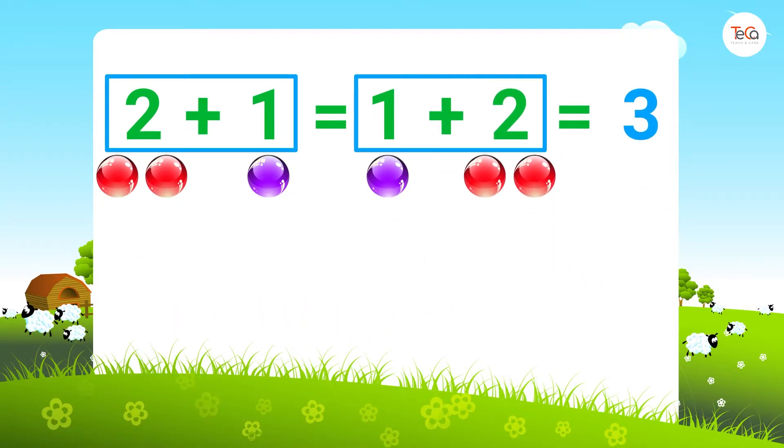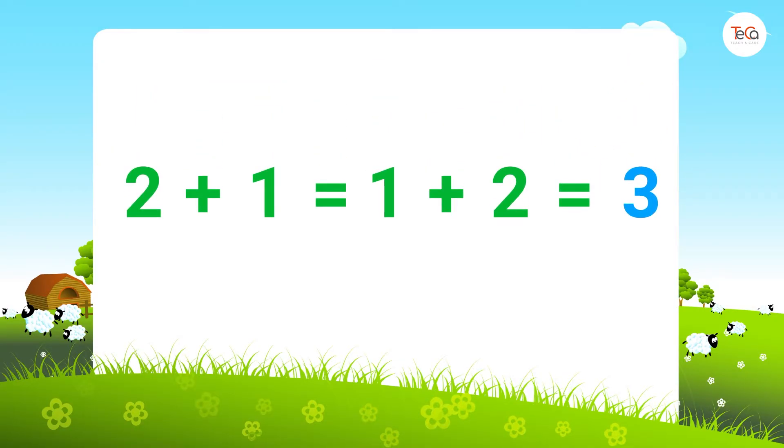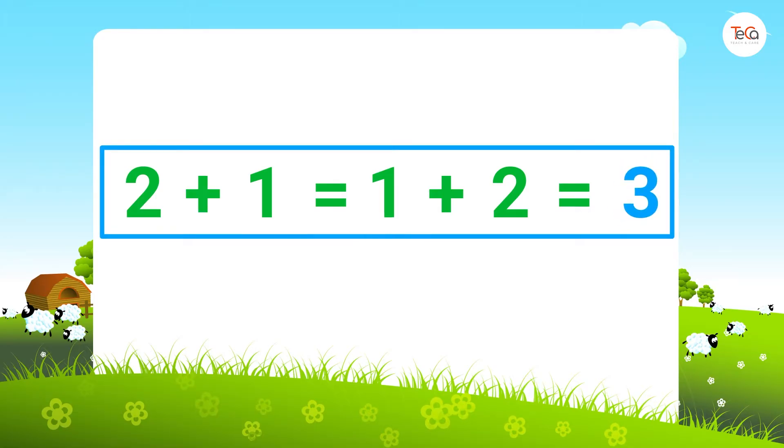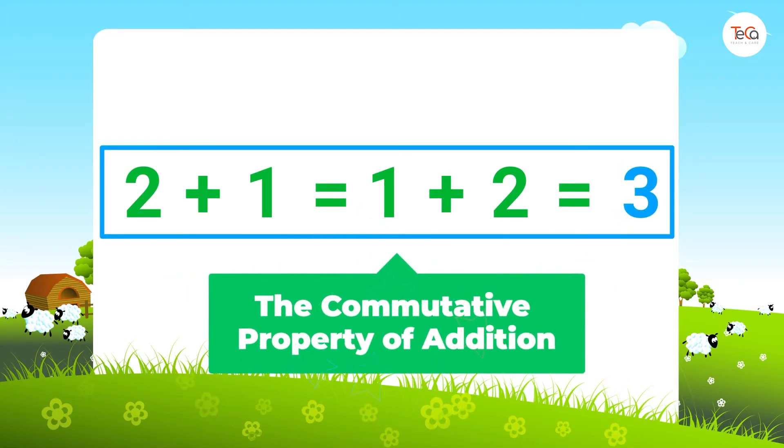Do you see? 2 + 1 is the same as 1 + 2. They both equal 3. Look, when we swap the numbers over, the sum doesn't change. This is the commutative property of addition.